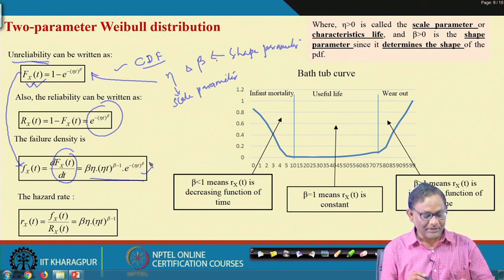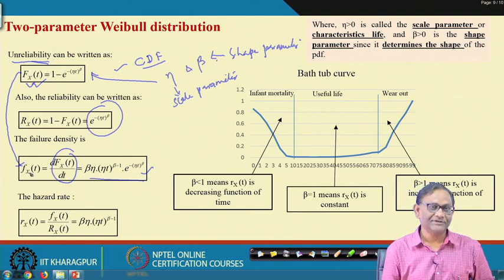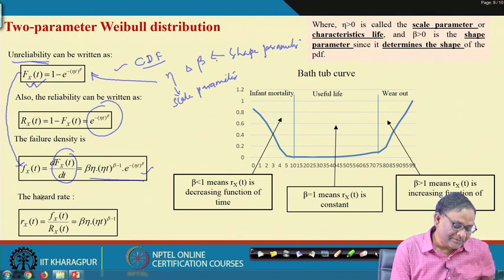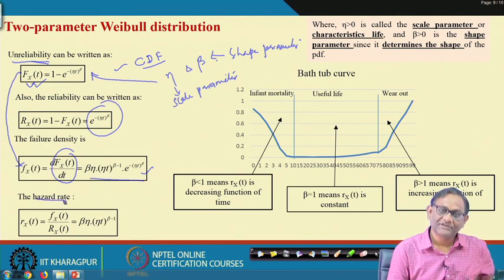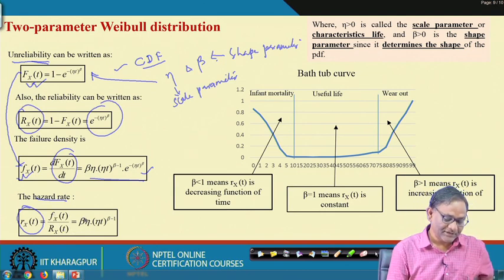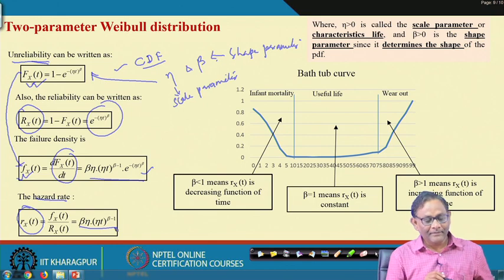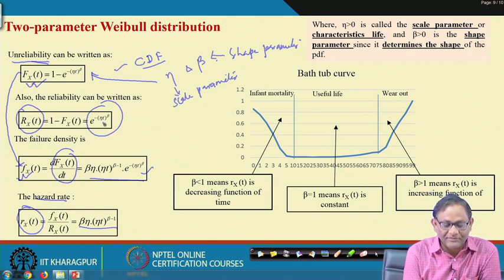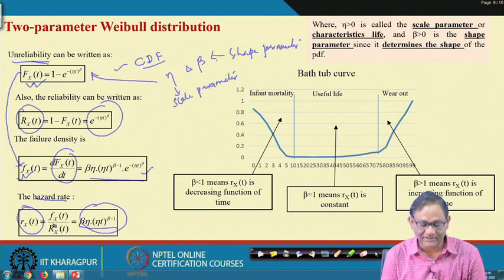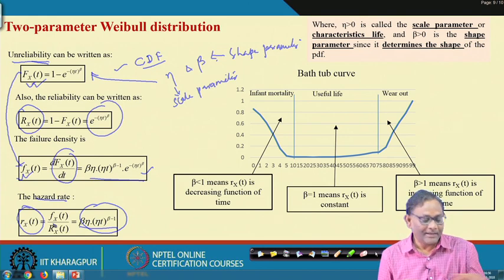The hazard rate or instantaneous failure rate h(t) = f(t)/R(t). Since the exponential terms cancel, the hazard function becomes h(t) = β·η·(η·t)^(β−1), which is beta·eta·(eta·t) to the power beta minus 1. This has a very good relation with the bathtub curve.